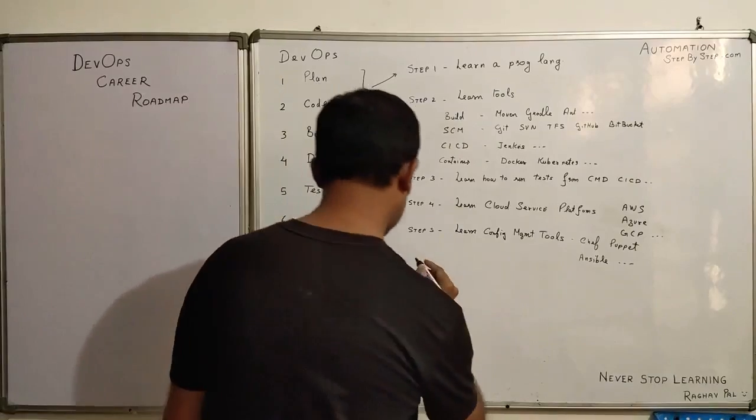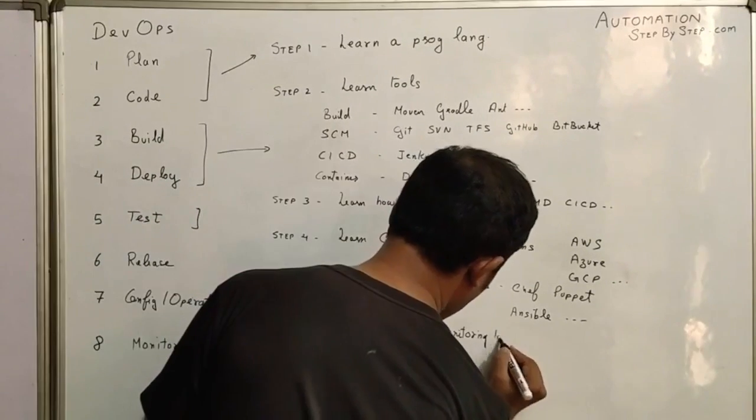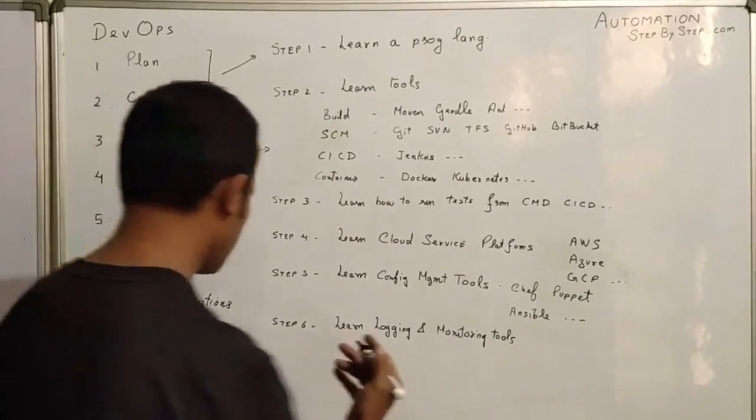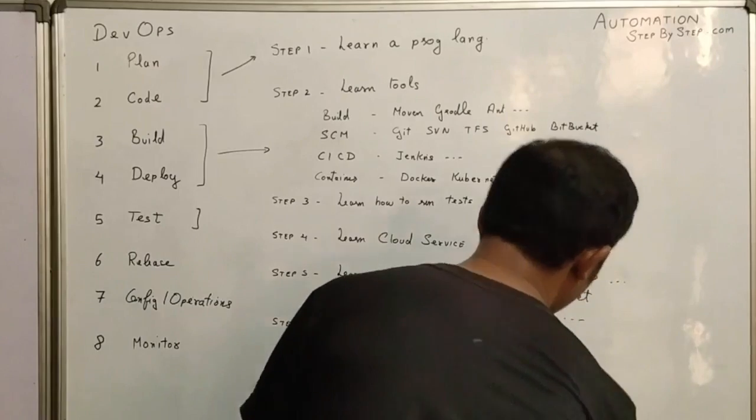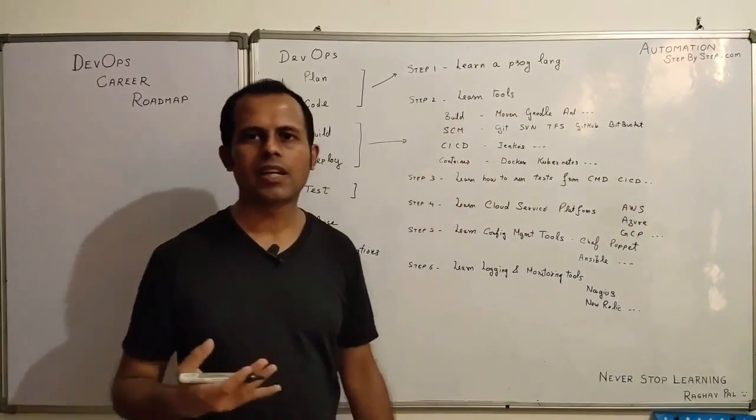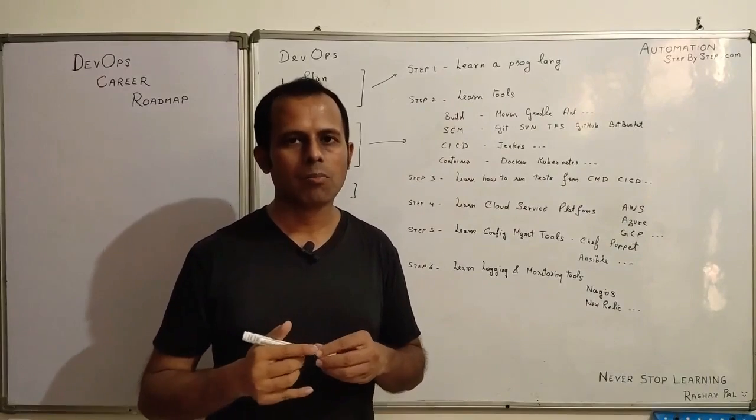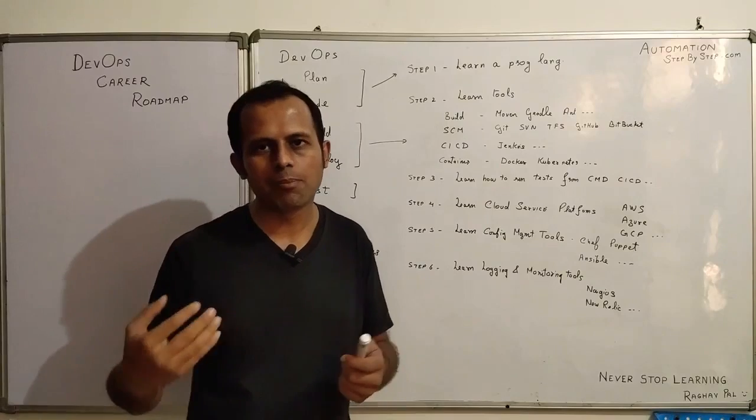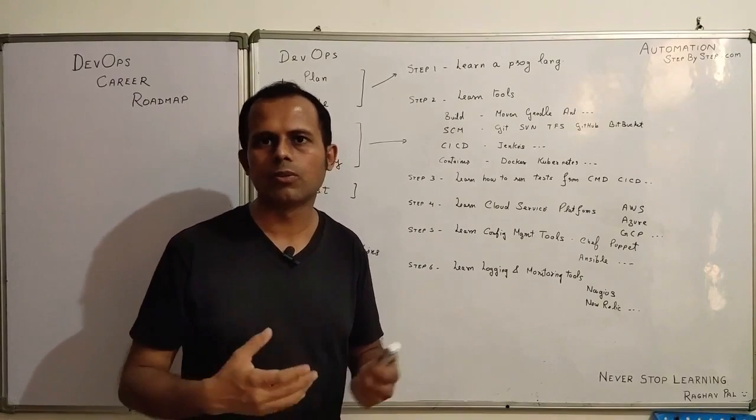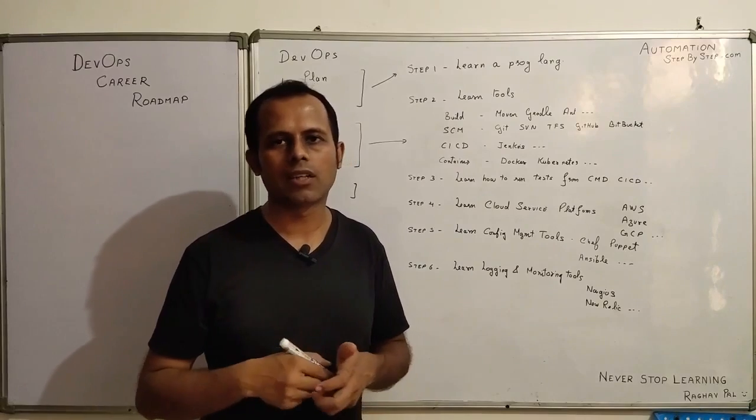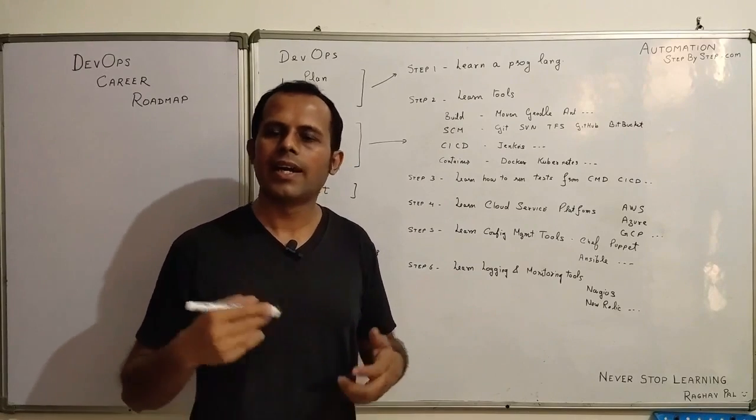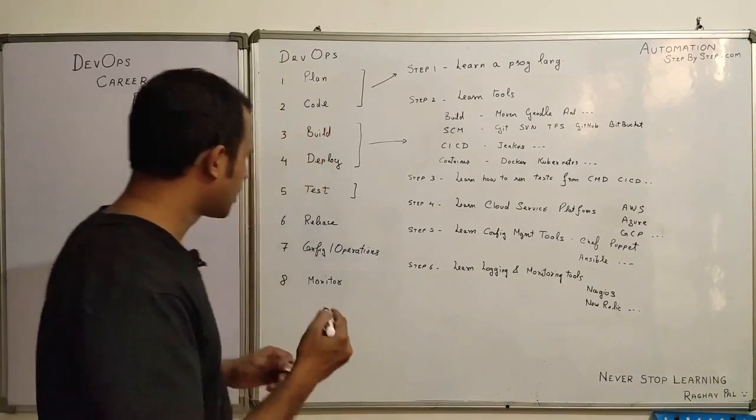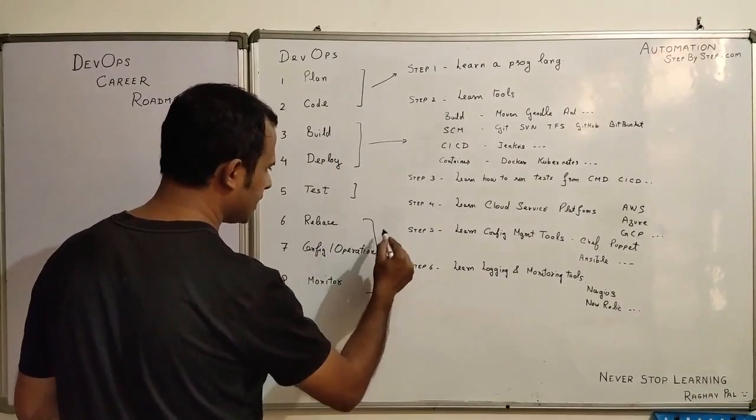Step number six is learn some logging and monitoring tools. Some common tools are Nagios, New Relic, or there are so many other logging platforms and monitoring platforms that you can learn. It can be based on your application. For example, for APIs, you can select what is the best for you. For UI, you can select what is the best for you. You will get a lot of information online. A basic knowledge of these monitoring and logging tools will help you a lot. This will cover these three stages.